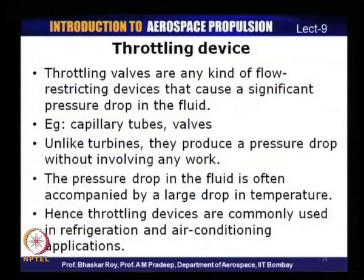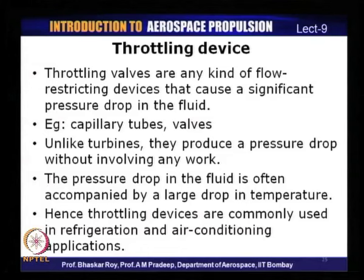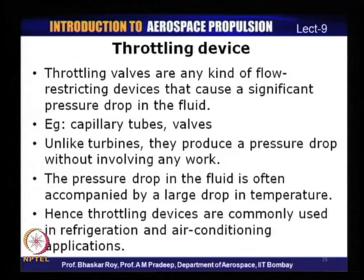The next device is the throttling device. Throttling devices cause flow restrictions leading to significant pressure drop in the fluid. Some examples are capillary tubes, valves, or porous plugs. Unlike turbines — where there is both pressure drop and work output — throttling devices produce a pressure drop without involving any work. This pressure drop is often accompanied by a large drop in temperature as well, which is why throttling devices are very commonly used in refrigeration and air conditioning systems.